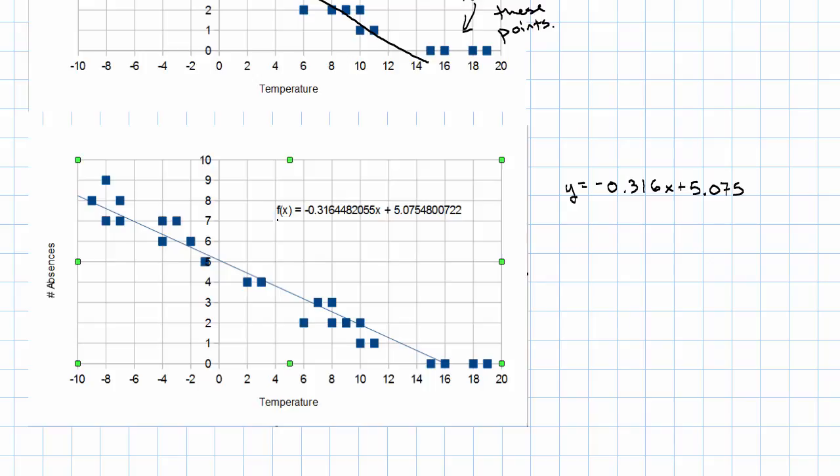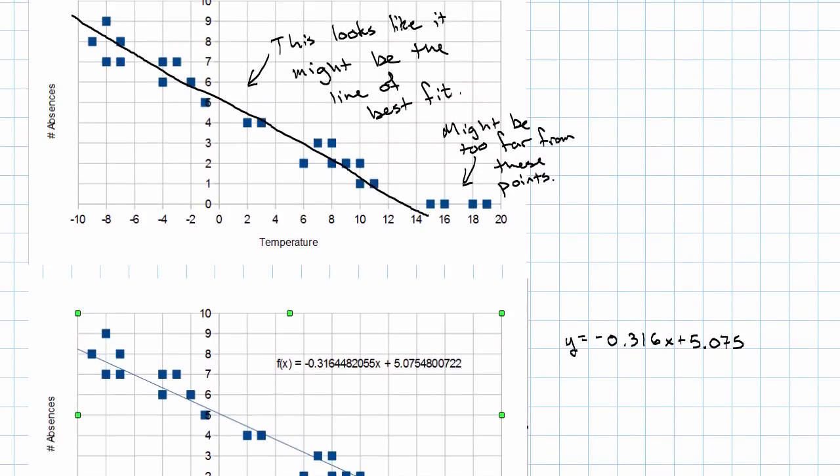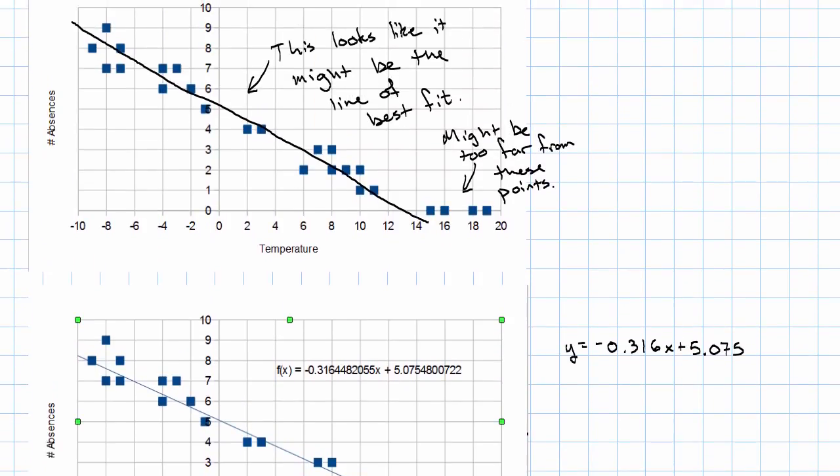The computer uses this f of x notation. Don't worry about that too much. That's just saying that it's naming the relationship. That line of best fit doesn't look too far away from the one that we just came up with by looking.